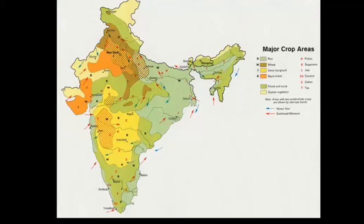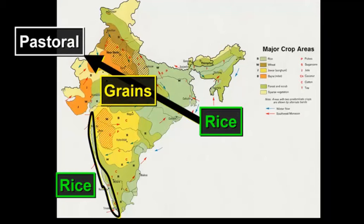Mirroring the precipitation patterns are the crop areas found in those particular areas. To the east, we find more rice, which likes a lot of rainfall and moisture. Things that don't like as much rainfall — like grains — are found more in the interior, the Deccan Plateau and parts of the Indus-Gangetic Plain. When we get to the Great Indian Desert and the Thar Desert area in Pakistan, areas not along the Indus River Valley, we find more pastoral grazing as the agricultural practice.